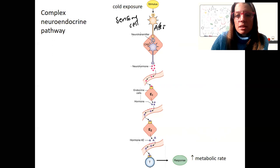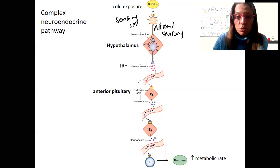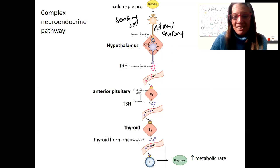This is going to be an afferent or sensory signal that travels to the central nervous system. This is going to be our hypothalamus. Hypothalamus is going to release TRH. TRH is going to target the anterior pituitary, which is going to release TSH, which is going to target the thyroid, which is going to release thyroid hormone to target target cells. The response in the target cells is going to be to increase metabolic rate. That's going to address our problem, our cold exposure.